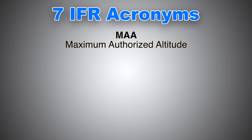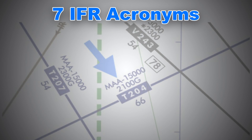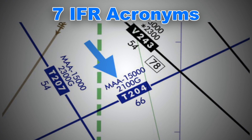Next up is MAA, or Maximum Authorized Altitude. There isn't much to it — it is exactly what it means. MAA is a published altitude representing the maximum usable altitude or flight level for an airspace sector or route segment. It is the highest altitude on an airway, jet route, RNAV, low or high route, or other direct route for which an MEA is designated. It is shown on IFR charts as highlighted.